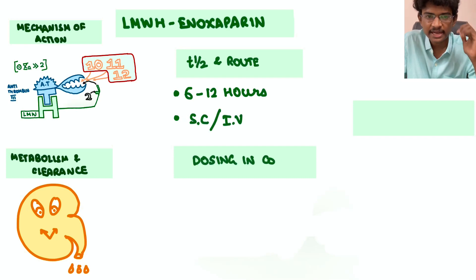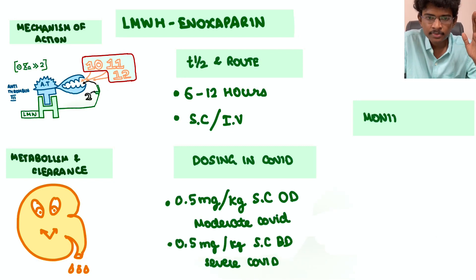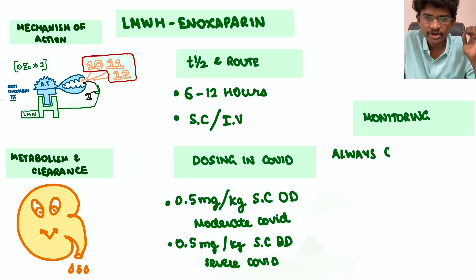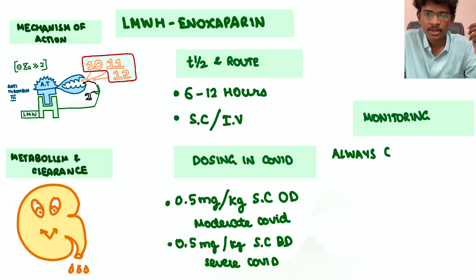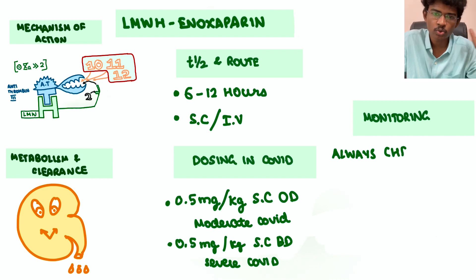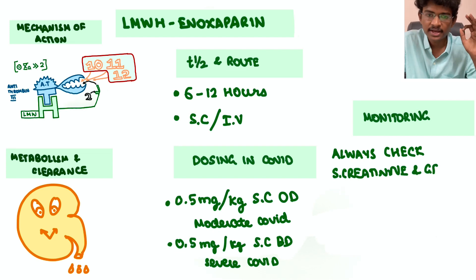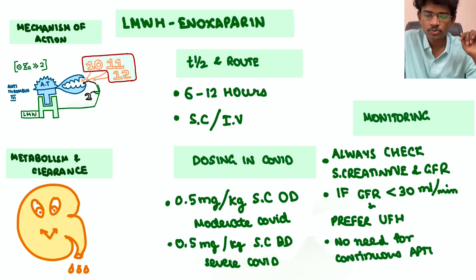LMWH is given subcutaneously: 0.5 mg/kg once daily for moderate COVID and twice daily for severe COVID. Dosing adjustments are needed for obese patients (may require more) and elderly patients (may require less). In patients with kidney disease, calculate eGFR — if it is less than 30 mL/min, it is always preferable to switch to unfractionated heparin, though 0.4 mL subcutaneous once daily can be given.